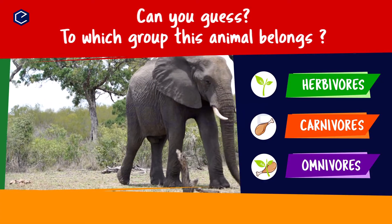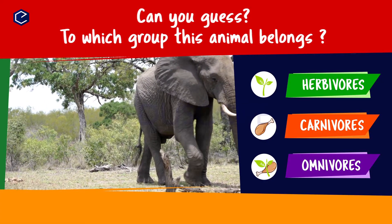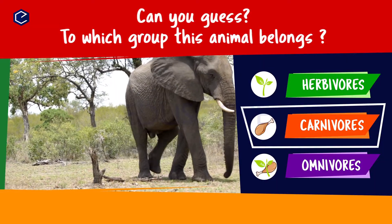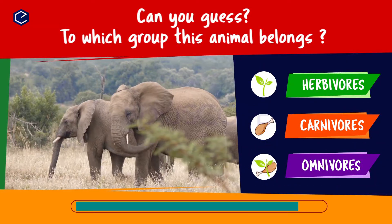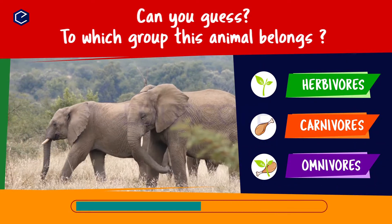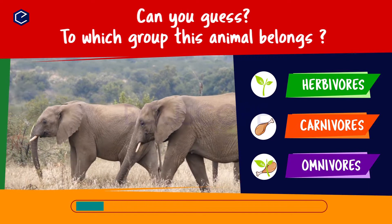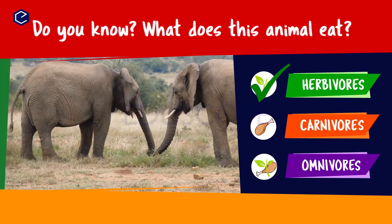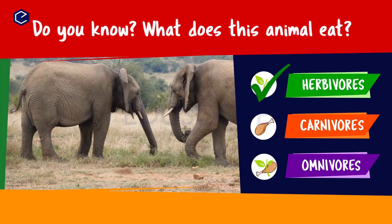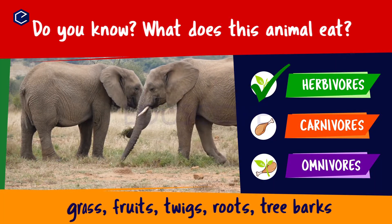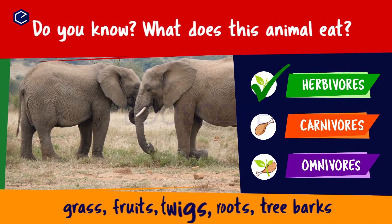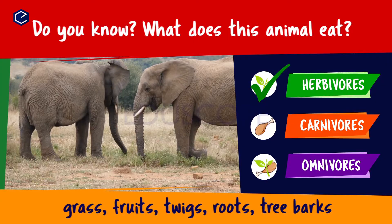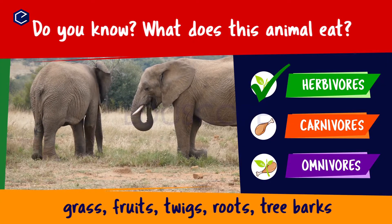Can you guess to which group this animal belongs? Herbivores, carnivores, omnivores. Do you know what this animal eats? An elephant eats grass, fruits, twigs, roots, tree barks. So elephant is a herbivore.